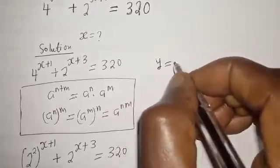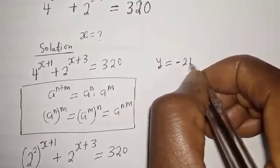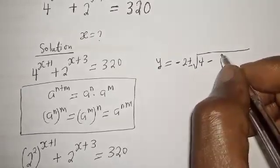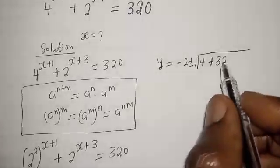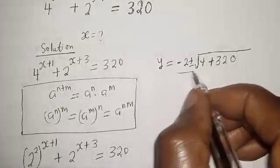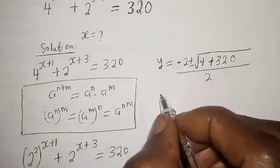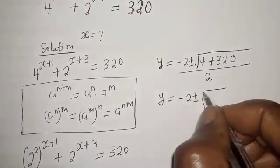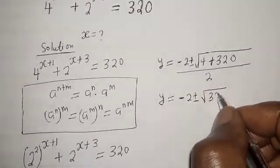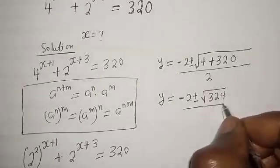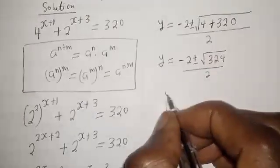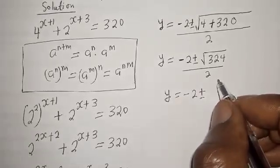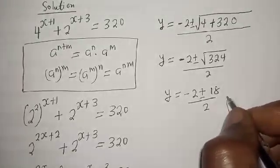Substituting: y equals minus 2 plus or minus square root of 2 squared minus 4 multiplied by 1 multiplied by minus 80, over 2 multiplied by 1. This gives y equals minus 2 plus or minus square root of 4 plus 320, over 2. That is y equals minus 2 plus or minus square root of 324, which is 18, over 2.